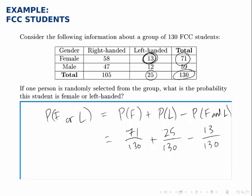So we add up 71 plus 25, which is 96, subtract off 13, which is 83, so our final answer is 83 out of 130.